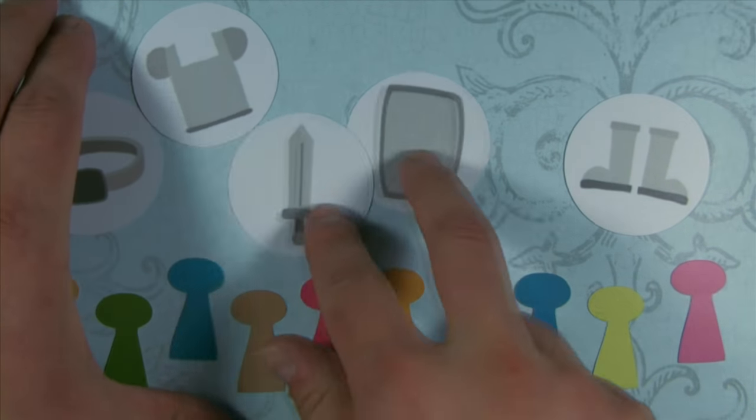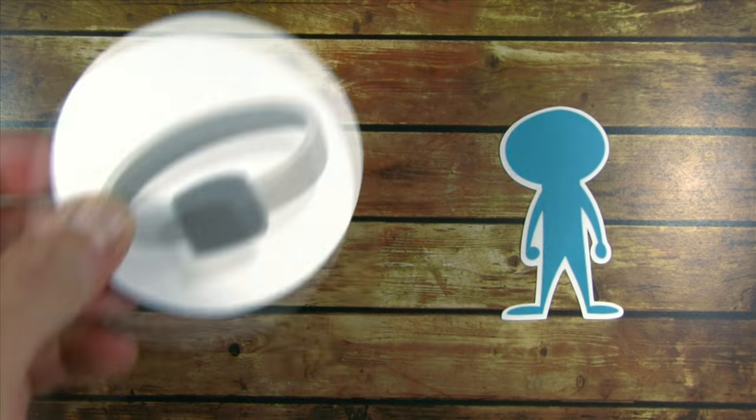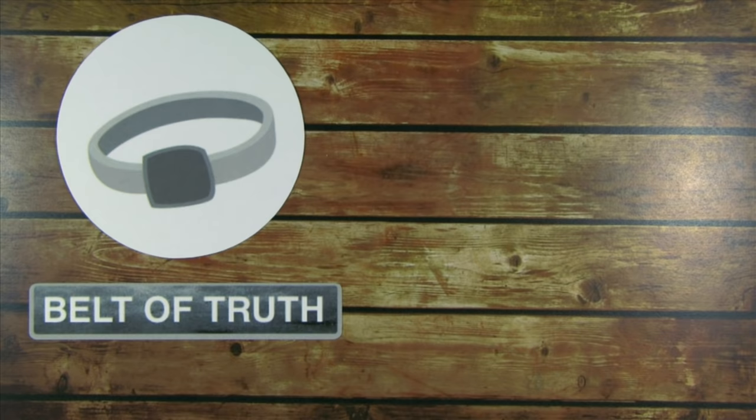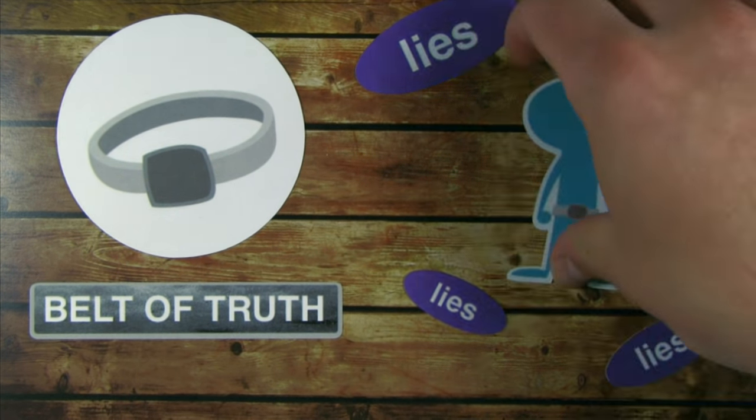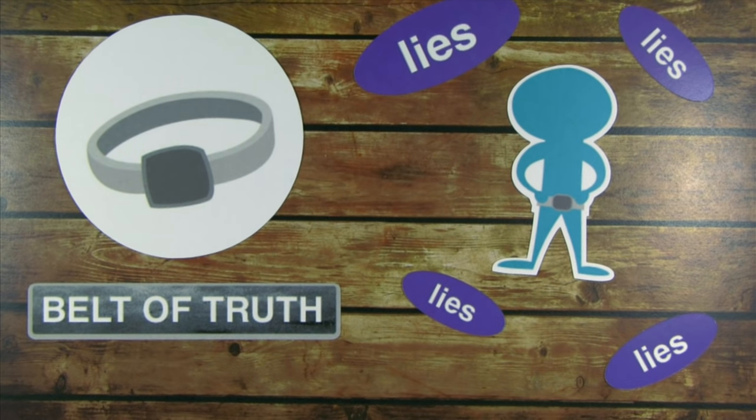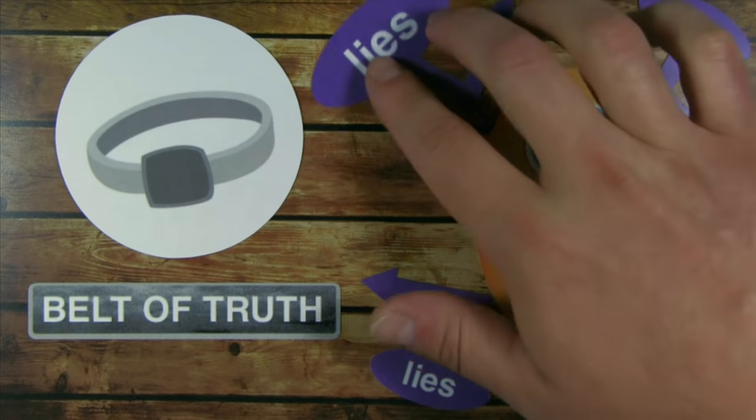And if you're going to be in a battle, you've got to have the right equipment. So the first thing we put on is a belt of truth. That's because Satan is the father of lies. But when we choose to believe the truth that Jesus rescued us and God loves us, it's like we're wearing devil repellent, so the devil's lies can't get through to us.